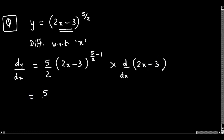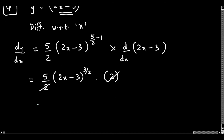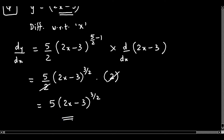Simplifying further, we get 5 by 2 times 2x minus 3 raised to 5 by 2 minus 1. Now 5 by 2 minus 1 equals 3 by 2. The derivative of 2x minus 3 is 2, and the derivative of the constant 3 is 0. We can cancel the 2 with the 5 by 2. Finally, dy/dx equals 5 times 2x minus 3 raised to 3 by 2. This is the value for dy/dx.